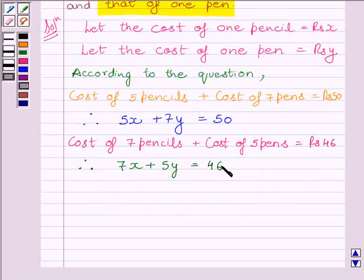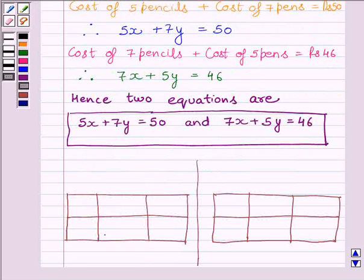So, our required two equations are 5X plus 7Y is equal to Rs. 50 and 7X plus 5Y is equal to Rs. 46. We will find two solutions for the first equation. These are 3, 5 and 10, 0.